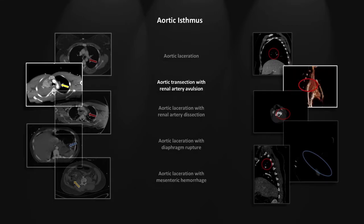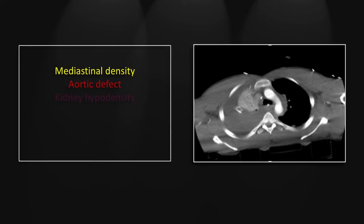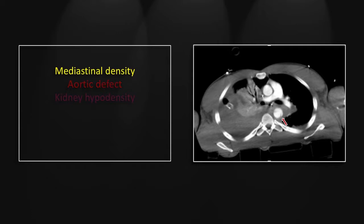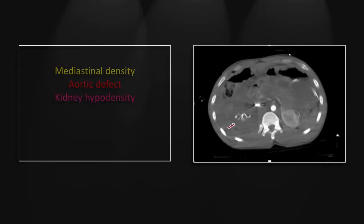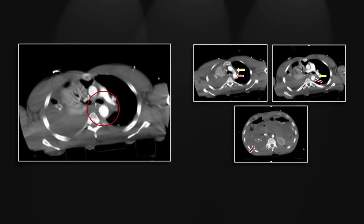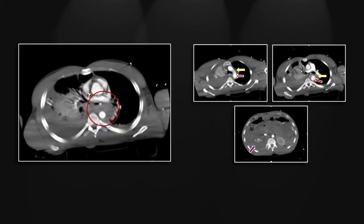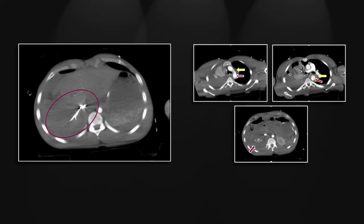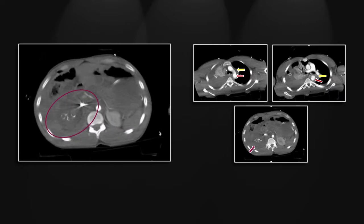Our next case is an aortic transection with avulsion of the right renal artery. In these transections, there will be both proximal and distal aortic defects visualized as the torn portions of the aorta pull apart. Here we see mediastinal fluid and the proximal aortic defect, and lower down mediastinal fluid and the distal aortic defect. This patient also has a markedly hypodense right kidney. You can see the asymmetry compared to the left nephrogram, clearly indicating that this kidney has lost arterial flow. The central serpiginous densities in the right kidney are right renal venous back flow. Here are the proximal and distal defects in the aorta with an intervening segment of dilation bound by adventitia, and here is venous back flow first in the adrenal vein and now in the renal vein.